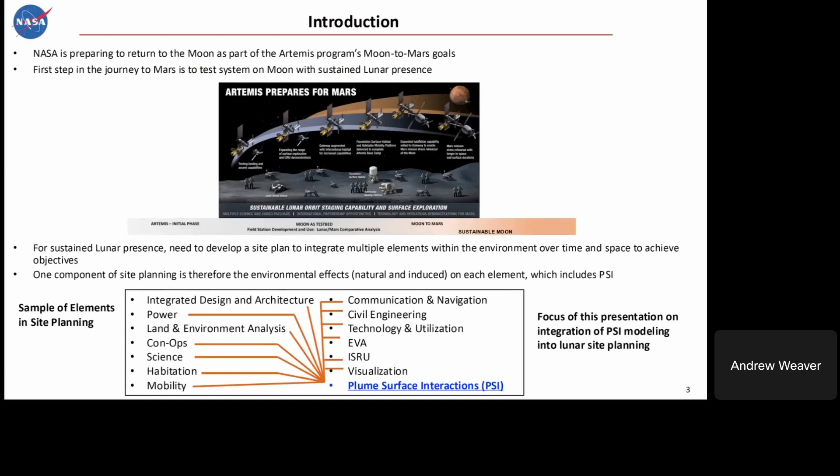NASA is preparing to return to the moon as part of the Artemis program's Moon to Mars goals, with the first step in that journey to Mars being going to the moon and testing systems for a sustained lunar presence. This involves more than just the lander — we need multiple systems: habitation for astronauts, mobility to get around on the moon, EVA suits, communication across the surface and back to Earth, navigation, and power for all these elements.